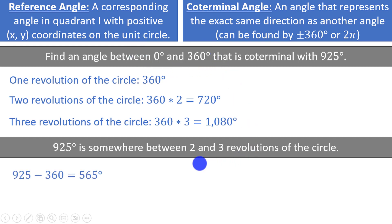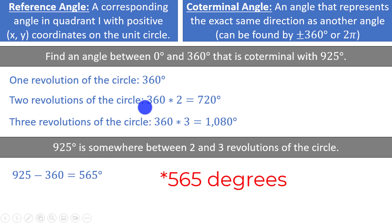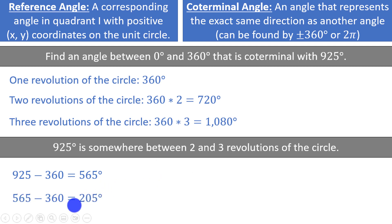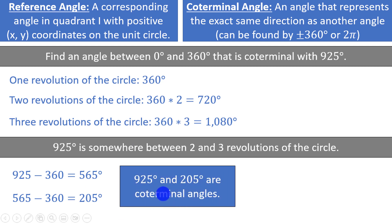If we take 925 and subtract 360 one time, we get 565 degrees — still not within the first revolution. If we subtract 360 again, we get 205 degrees. 205 degrees is between 0 and 360 degrees, so this is the angle we want. 925 degrees and 205 degrees are coterminal angles, meaning they represent the same direction.